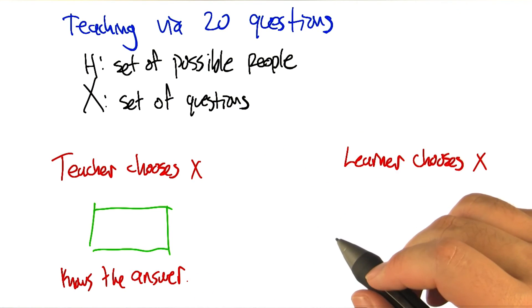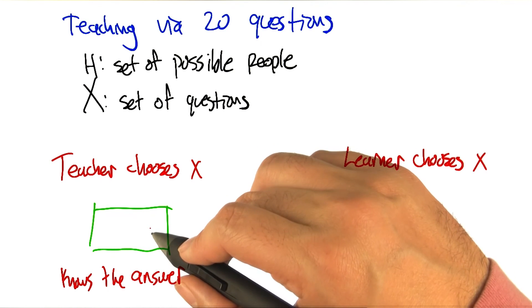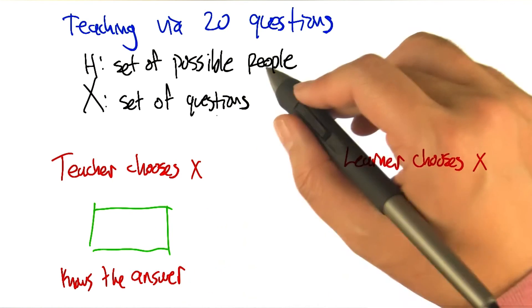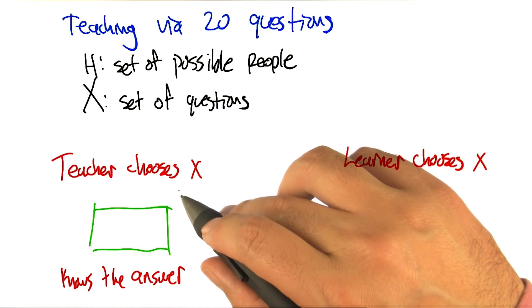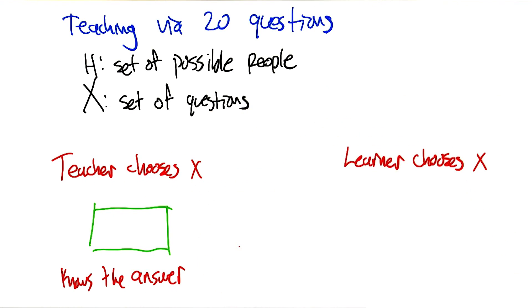Indeed. All right, so let's just do a quick quiz and say: how many questions are necessary for a smart learner to figure out the right person, assuming that the teacher is the one who gets to feed the learner good questions? Okay, go.